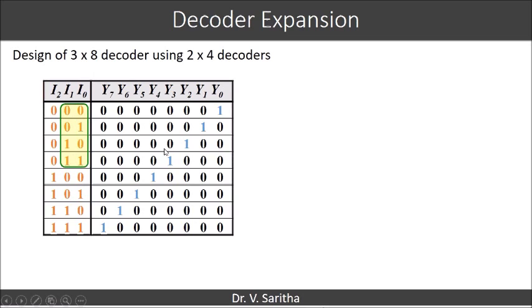For these we can see which output is 1 at a time. If you consider y0, y1, y2, y3, you can see that these are 1 at a time. When I consider I2 is 0 and I1 I0 for different combinations, y0 y1 y2 y3 will be the outputs.